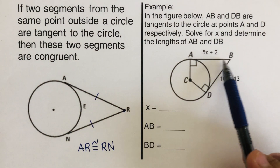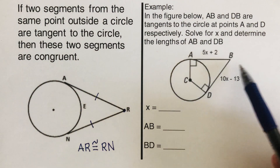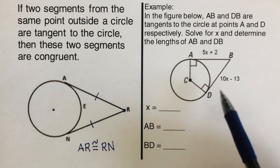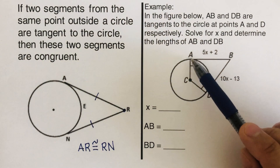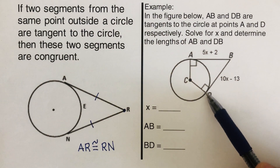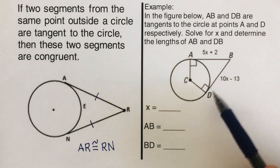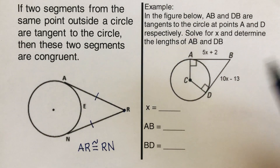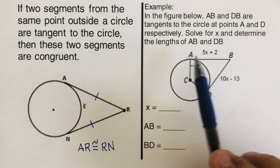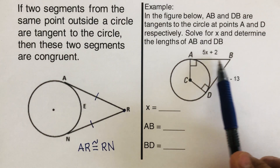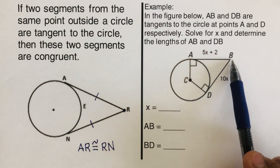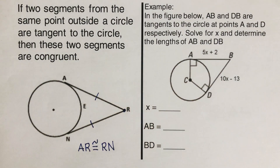Now let's have an example. In the figure below, lines AB and DB are tangent to the circle at points A and D. The task is to solve for x and determine the lengths of AB and BD — they are both coming from the same point B. I'd encourage you to pause this video and try this problem on your own, then resume to check your answer.